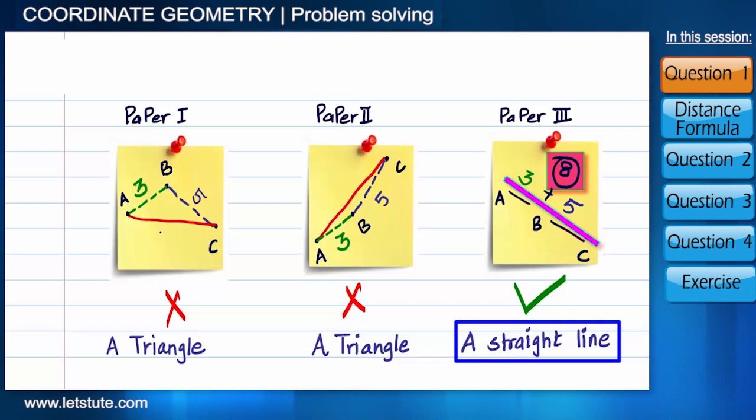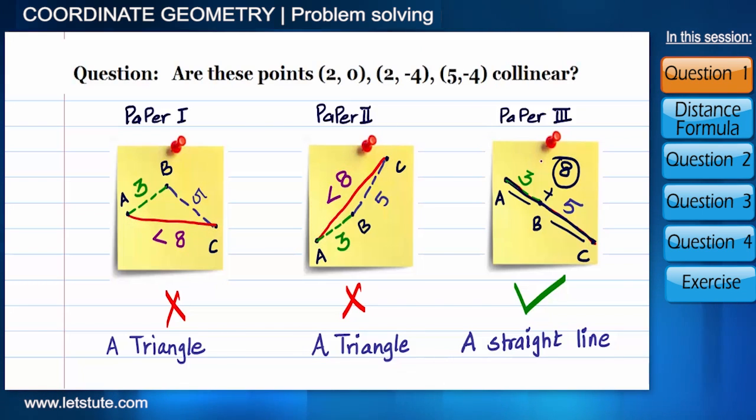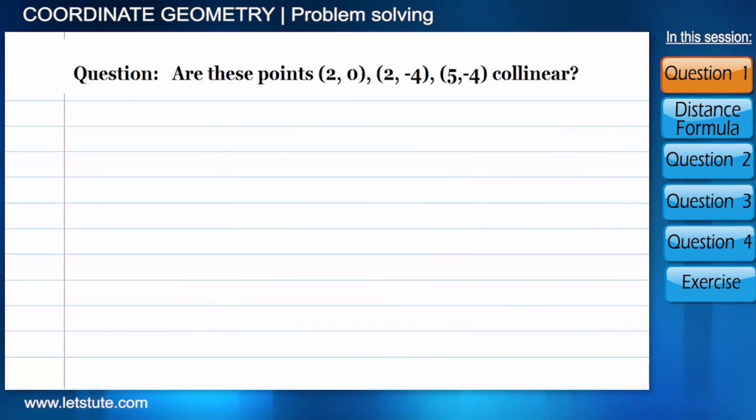Otherwise, AC will always be less than eight units and forms a triangle. Now we'll find the distances between coordinate points and check whether it forms a straight line or not. The given part is three points, so let's name them P, Q, and R, and we have to see whether points are collinear or not.